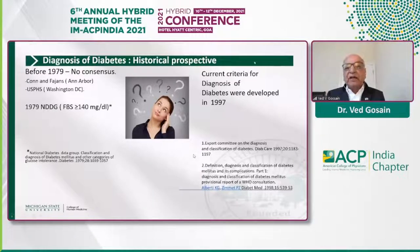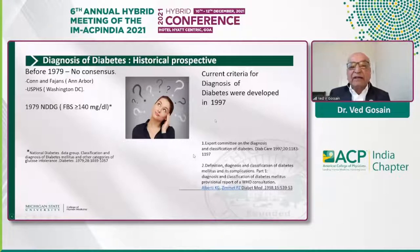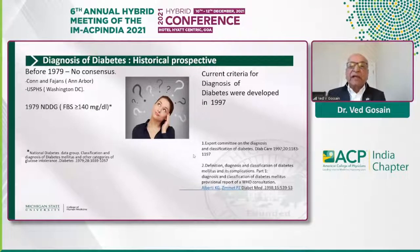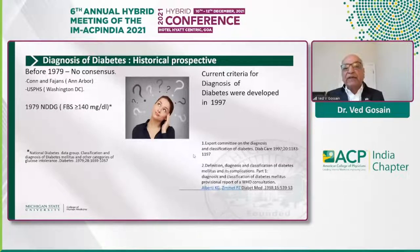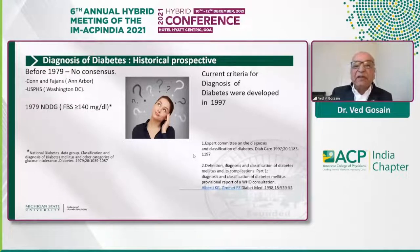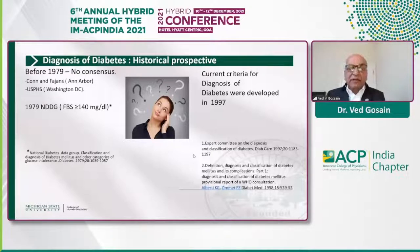The criteria we use currently were developed in 1997, and these were based on epidemiological data which showed that at the glucose numbers we now use to make a diagnosis of diabetes, retinopathy took a big jump. Retinopathy was considered to be a specific marker for diabetes.